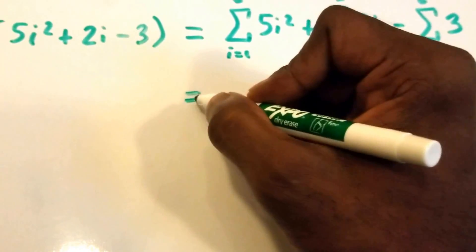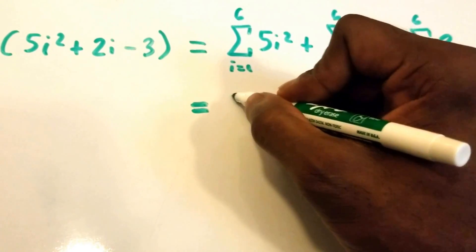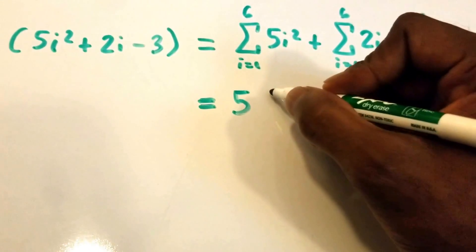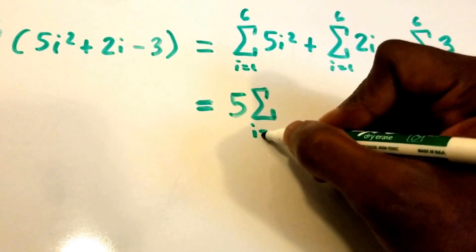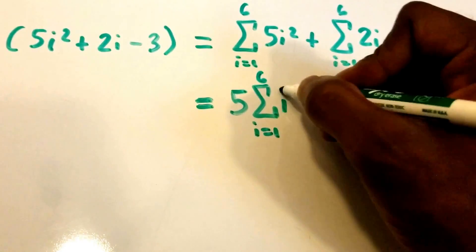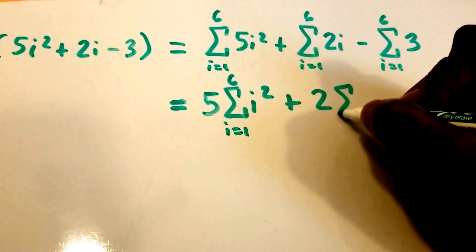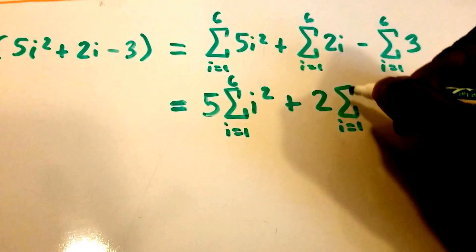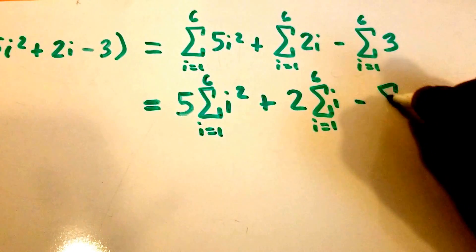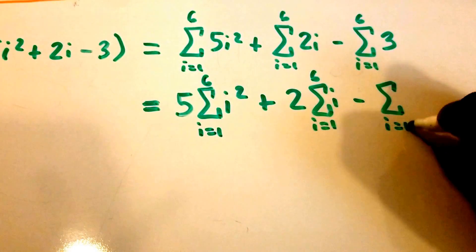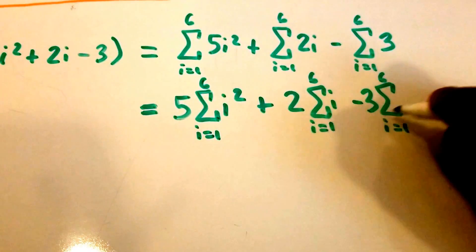Now we're going to move the constants out using the properties of summation. So we get 5 times the summation from i equals 1 to 6 of i squared, plus 2 times the summation from i equals 1 to 6 of i, minus 3 times the summation from i equals 1 to 6 of 1.